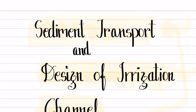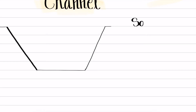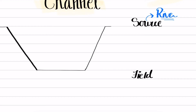First of all, what is sediment transportation? To understand sediment transportation, we need to understand about the irrigation canal or irrigation channel. An irrigation canal is nothing but a structure that is used to transfer water from the source to its destination. The destination is usually the field, and the source is usually a river — water from a perennial river is transferred to the field for irrigation purposes through an irrigation canal.